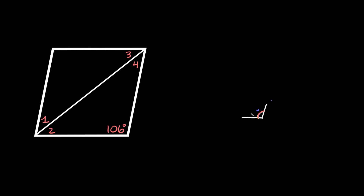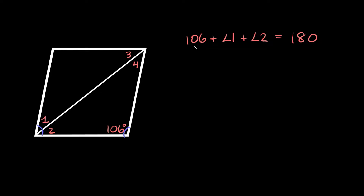Now that we got the intro out of the way, let's jump into this first example. We have a rhombus with an angle of 106 degrees and we're trying to solve for four different angles. We can start with consecutive angles: 106 plus angle one plus angle two has to equal 180. Subtracting 106 from both sides, angle one plus angle two equals 180 minus 106, which equals 74.